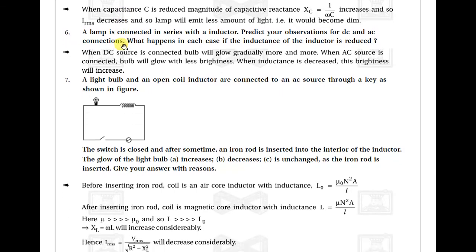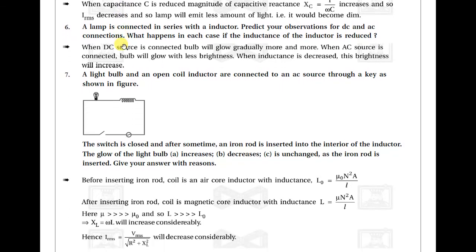Example six: a lamp connected in series with an inductor. When a DC source is connected, the bulb glows gradually more and more. When an AC source is connected, the bulb glows with less brightness. When the inductance is decreased, the brightness increases.